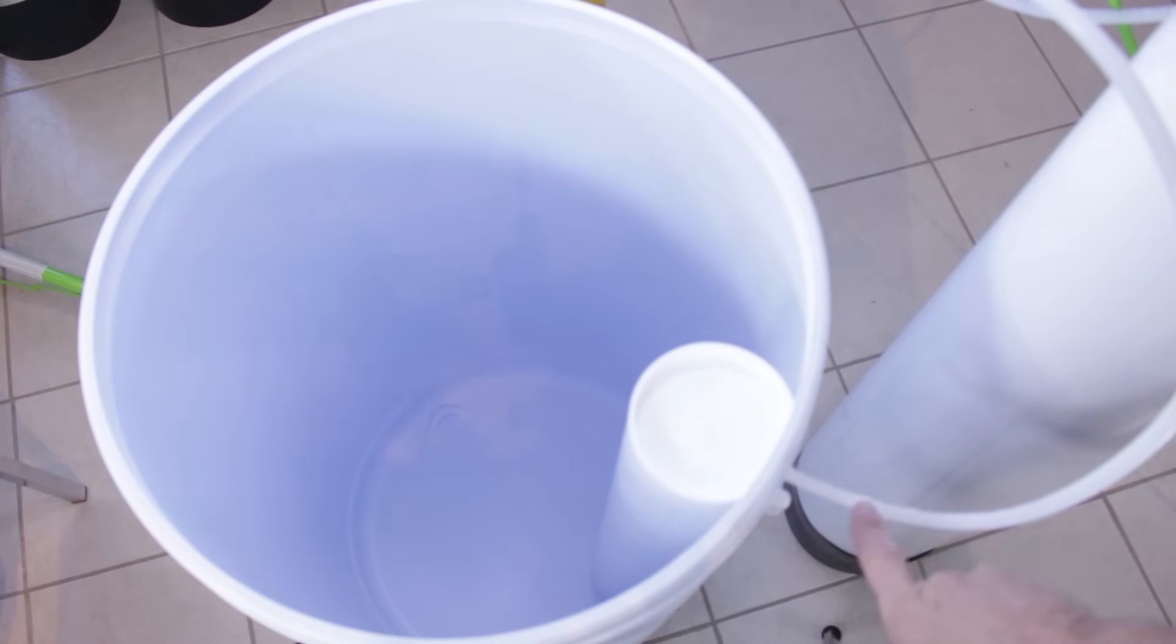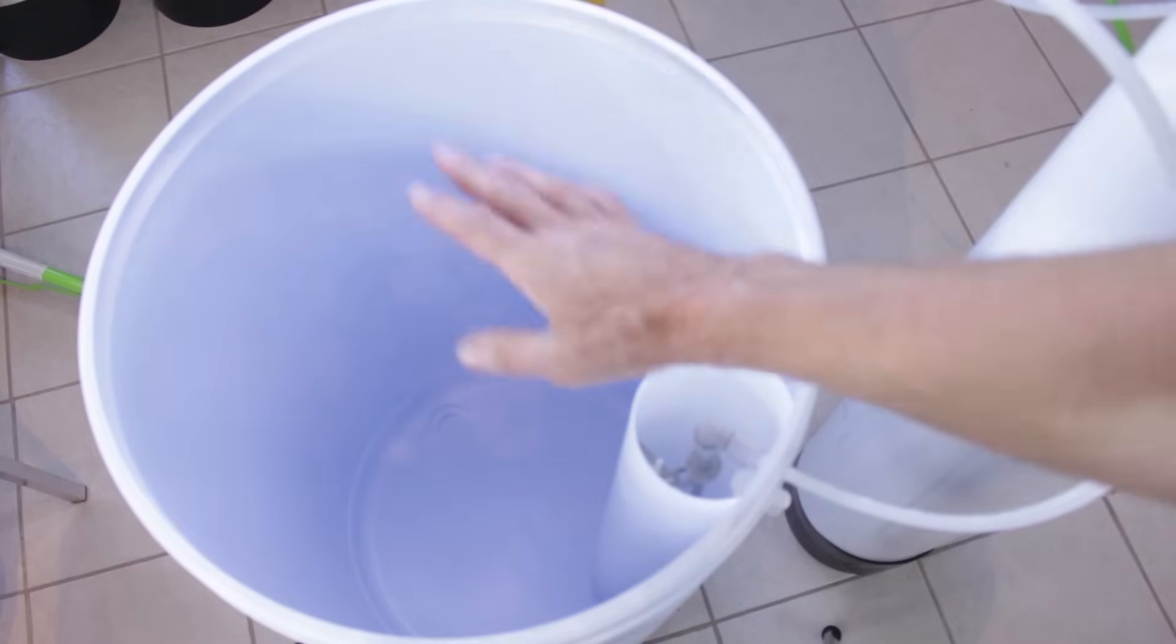The first thing you want to check is to make sure that this brine line is attached inside the brine line level control or the float. You can see the float is right here and this line here needs to be attached properly to that float. If it's not, the water just flows in and keeps going higher and higher. That's the first step to check.